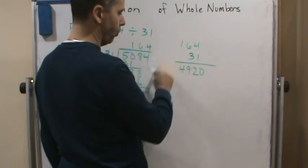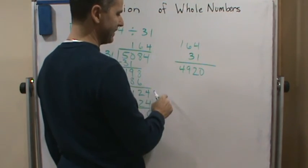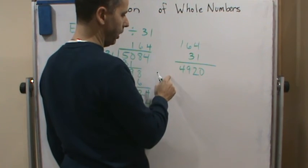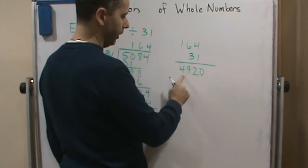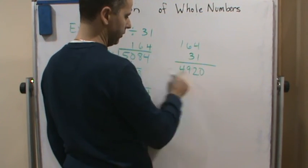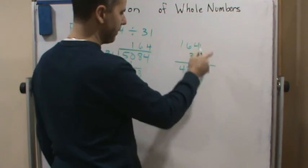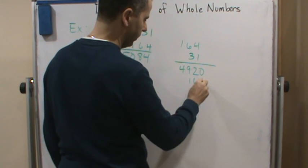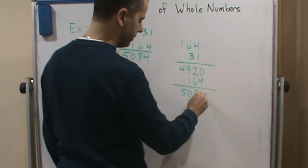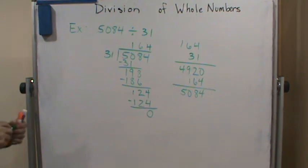480 plus 12 is 492. 492 plus 0, because it's not 3, it's 30, so I get a 0 here. And then 1 times 164 is just 164. And so when I add, I get 5,084. And it checks. And that's it. Have a great day.